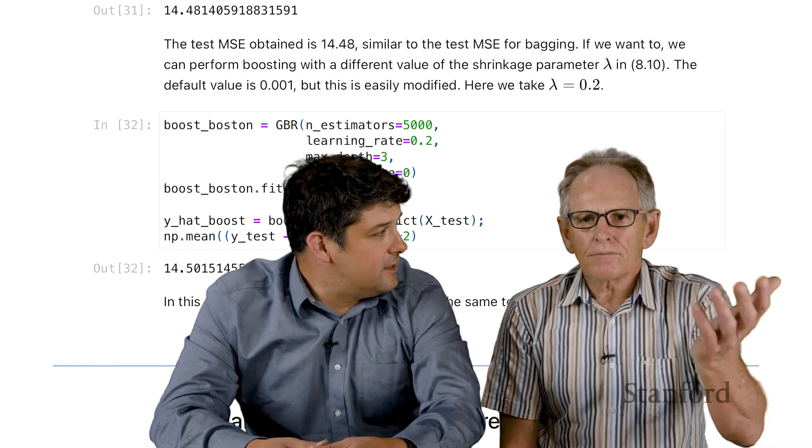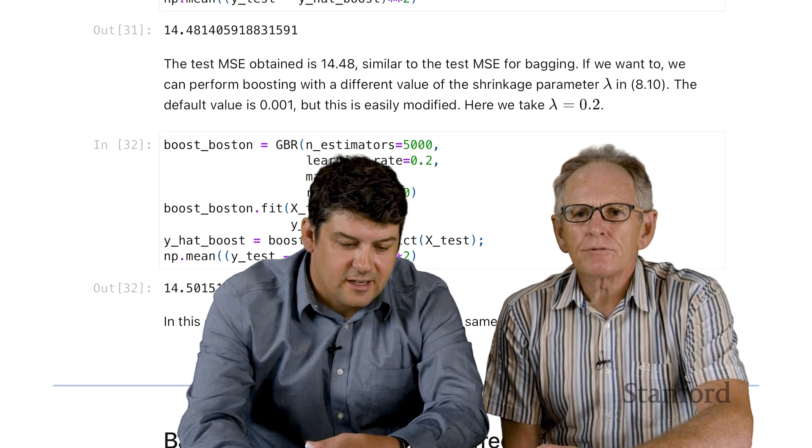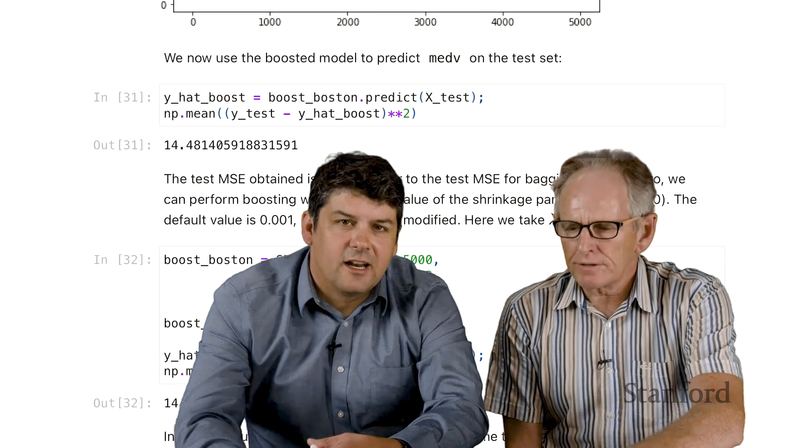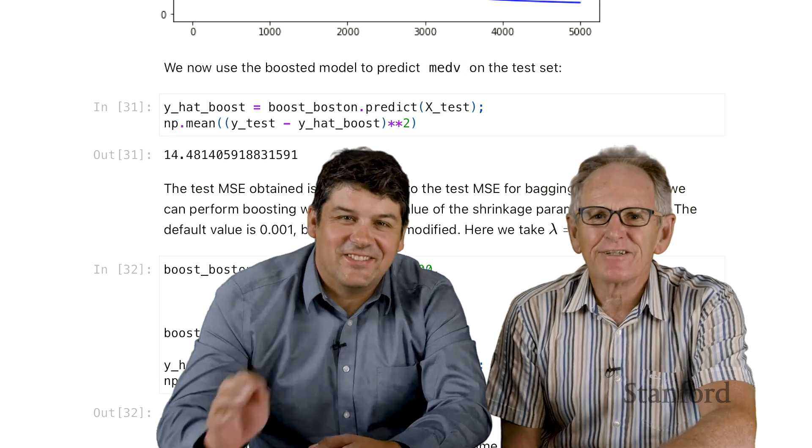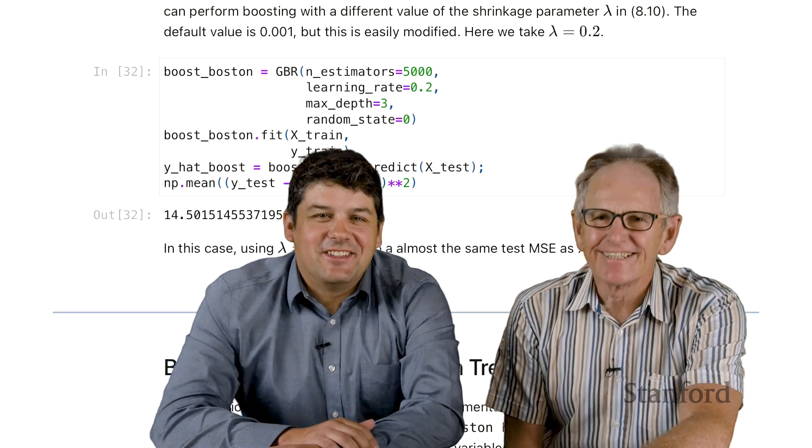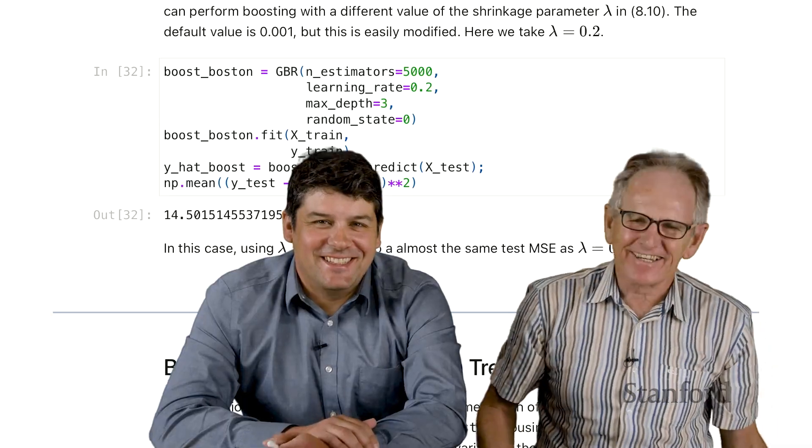We're not going to, the final topic here is Bayesian additive regression trees. We're not going to talk about those. And this is a good place to wrap up the lab for chapter eight. Thank you.